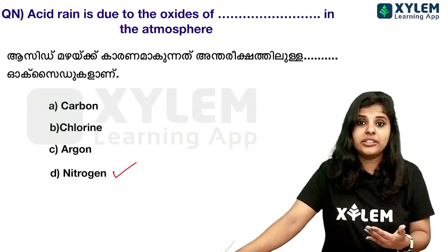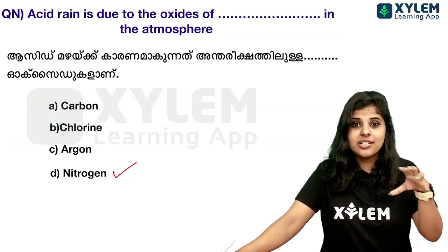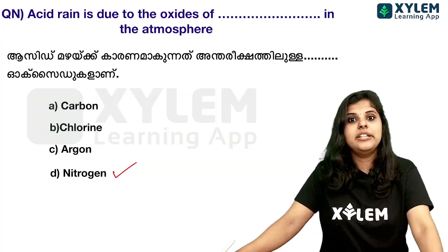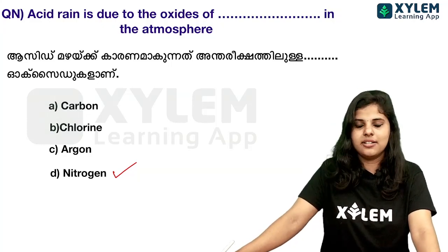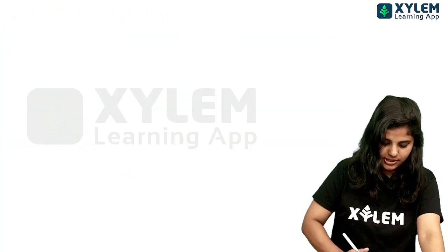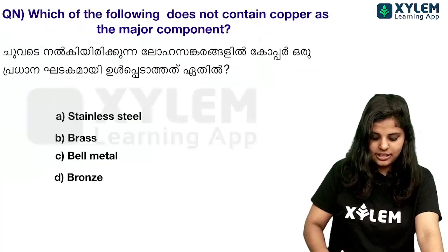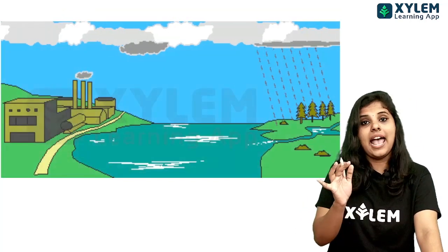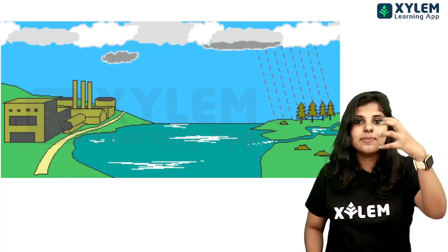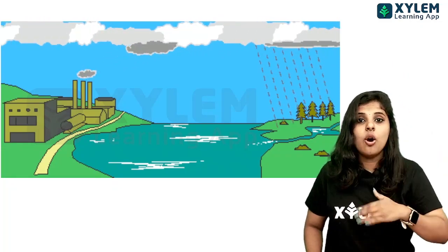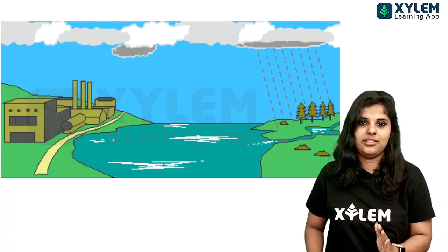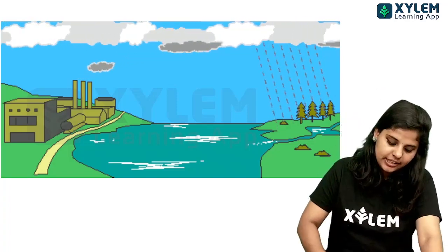Acid rain affects structures like the Taj Mahal — the stones are damaged by acid rain. The acid rain forms when industries release smoke containing these oxides into the gas atmosphere, which then react to form acid rain.